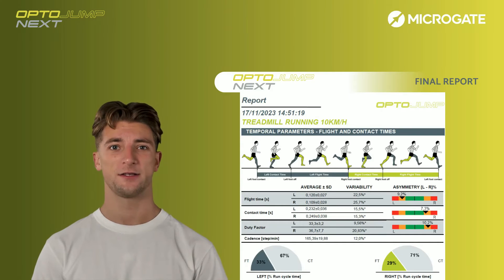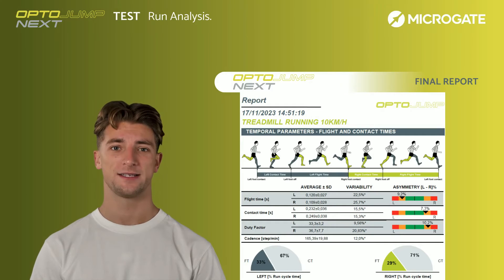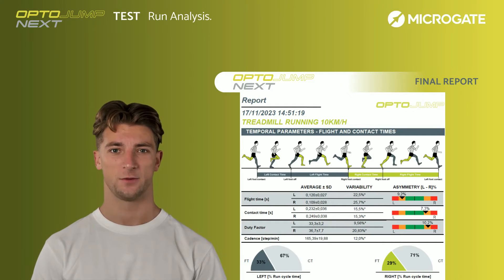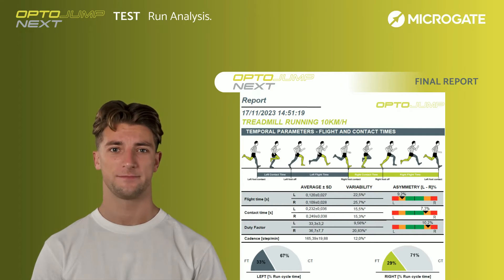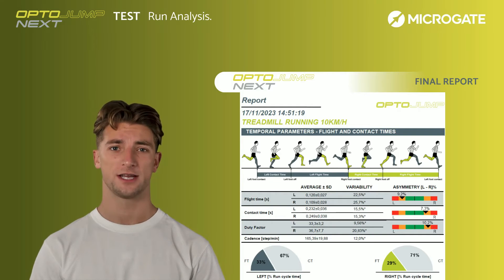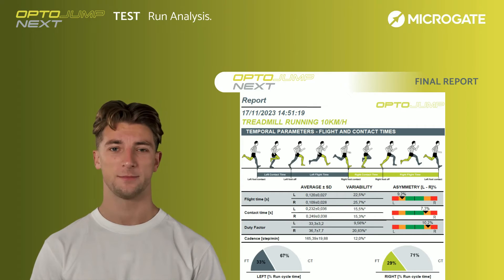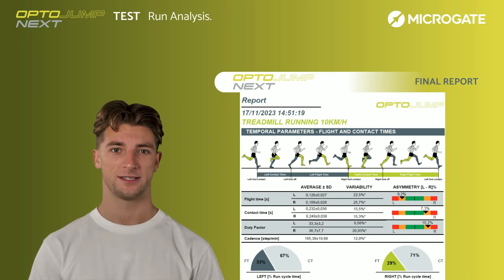Let's now dissect the duty factor for each side. On the left, it sits at 33.3%, signaling that the left foot makes contact with the ground for about a third of the entire stride cycle. The variability at 9.56% suggests a quite consistent pattern in this aspect of the running motion. Shifting to the right side, we observe a duty factor of 36.7%, meaning the right foot is in contact with the ground for just under two-thirds of the stride cycle. However, the higher variability of 20.83% indicates more significant fluctuations in this parameter across different running phases.